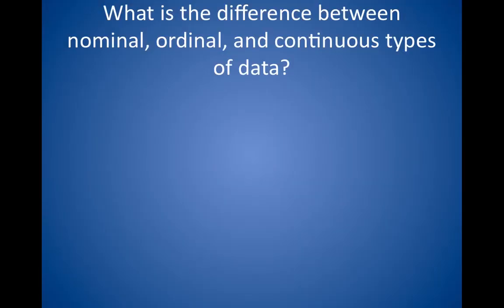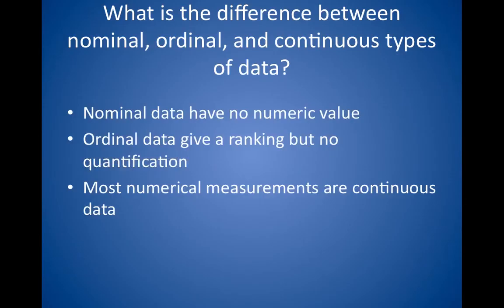What is the difference between nominal, ordinal, and continuous types of data? Nominal data have no numeric value — for example, the day of the week. Ordinal data give a ranking but no quantification — for example, class rank, which does not specify how far number one is ahead of number two. Most numerical measurements are continuous data — for example, weight, blood pressure, or age. This distinction is important: chi-squared tests must be used to compare nominal or ordinal data, whereas a t-test or analysis of variance test is used to compare continuous data.